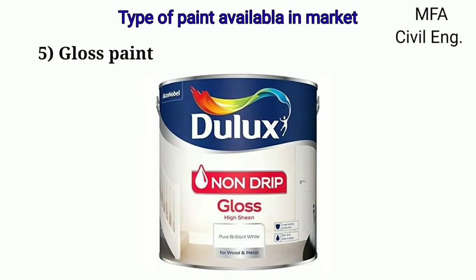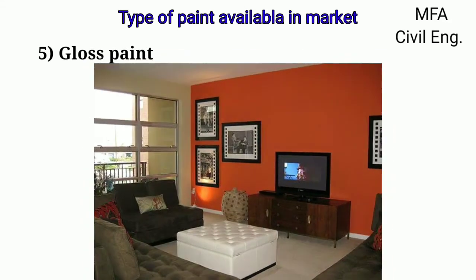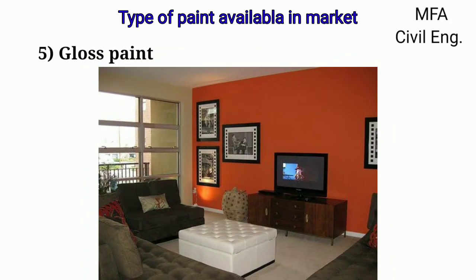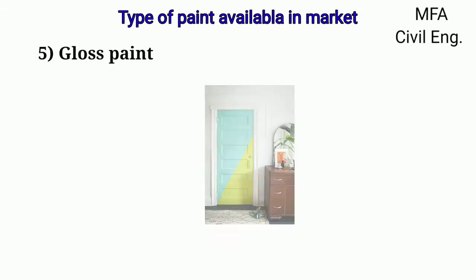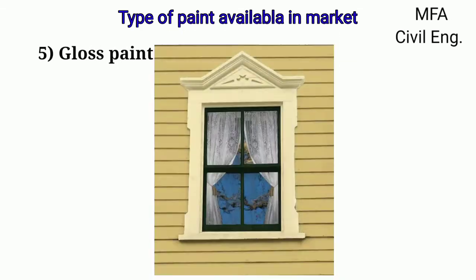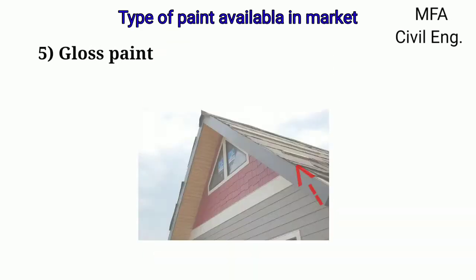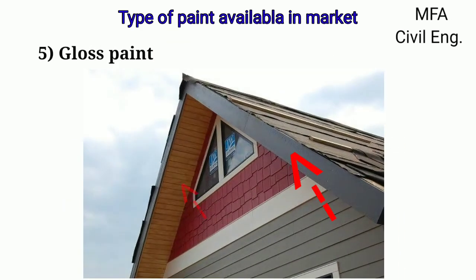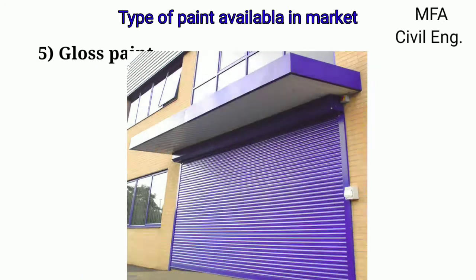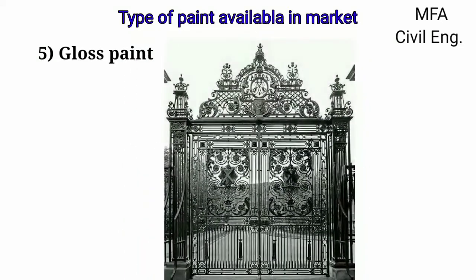Gloss paints help in highlighting detail and are also easy to clean. Gloss paints are ideally used for accents, trim, and other building components like doors, windows, fascia, eaves, shutters, and metal gates.